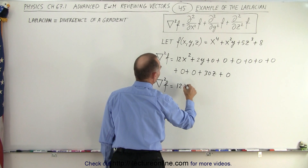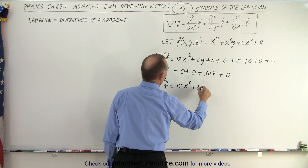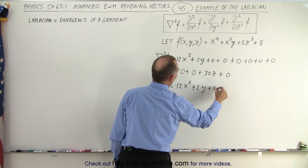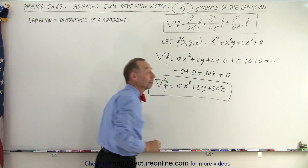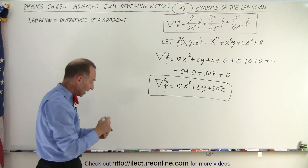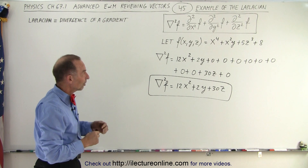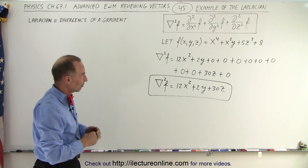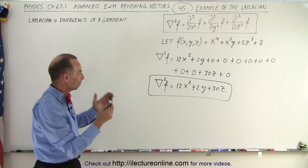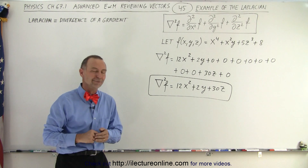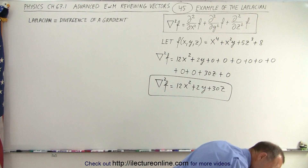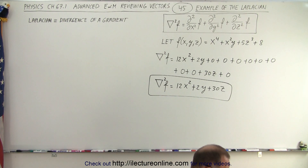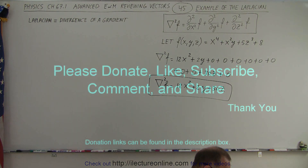In the end we get 12x squared plus 2y plus 30z, and this is the Laplacian of our scalar function x to the fourth plus x squared y plus 5z cubed plus 8. That is how it's done. Let's check to see if it's correct — 12x squared plus 2y plus 30z — that looks correct.